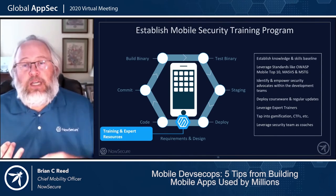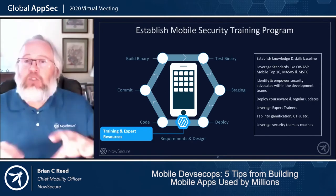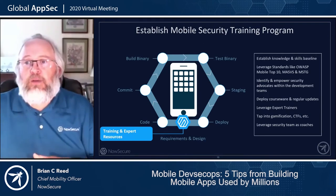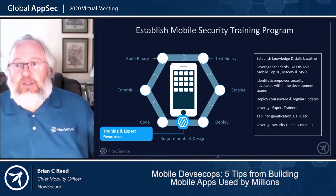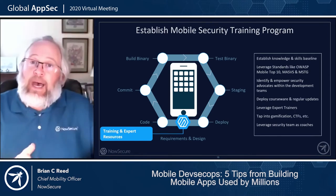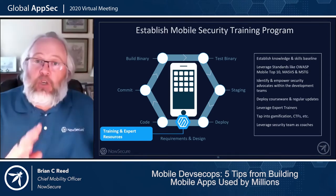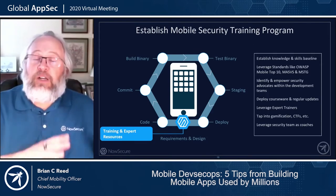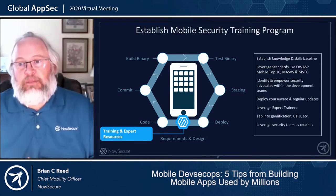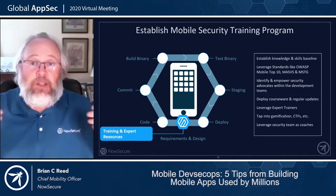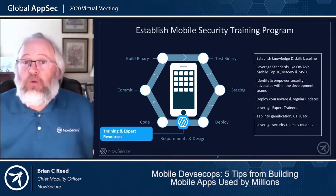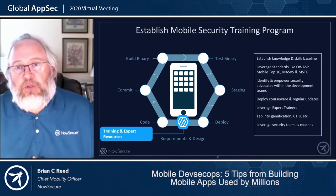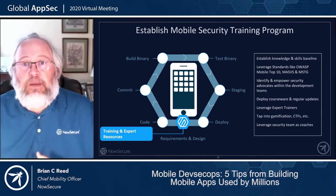All of these organizations have a knowledge and skills-based baseline — you either know this or you don't. New developers have to go through developer security training programs. They use standards like the OWASP MASVS and MSTG. They have security advocates embedded in development teams — ideally developers who are willing to be a security lead on the team. They leverage courseware, outside training, and conferences like this OWASP global event, which is a great way to learn how to be more effective.